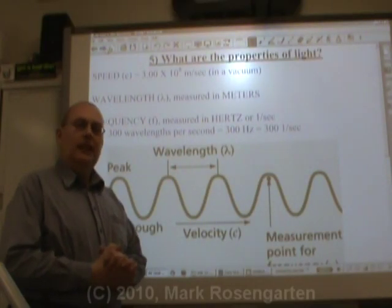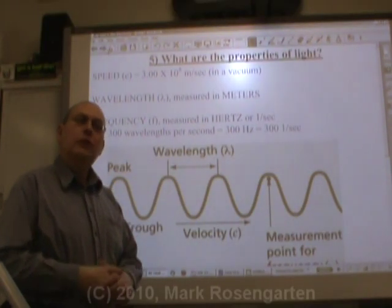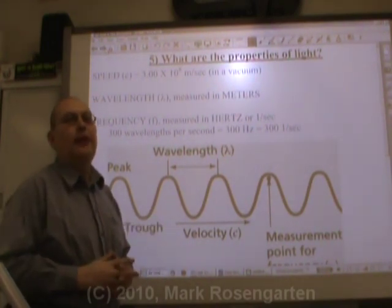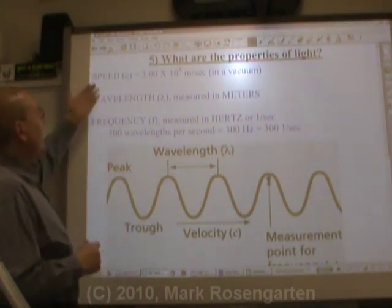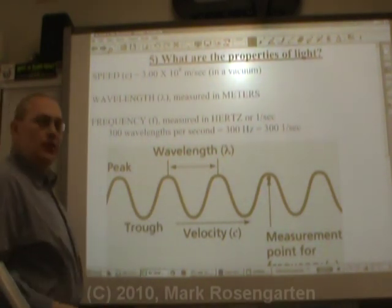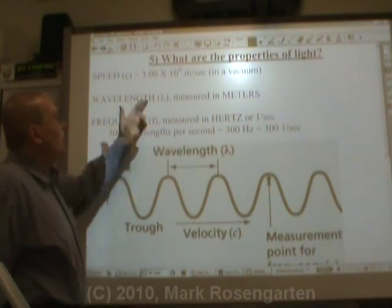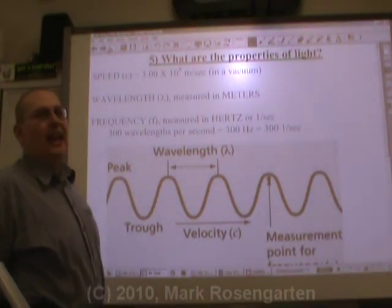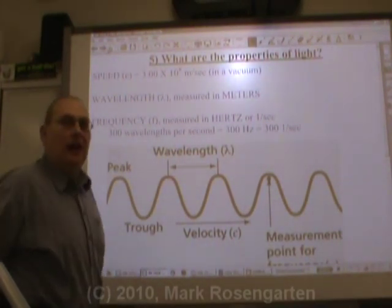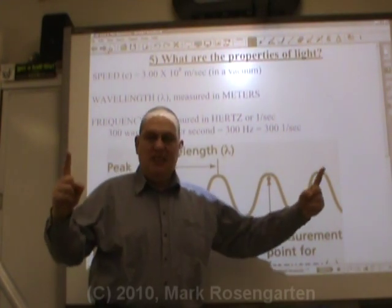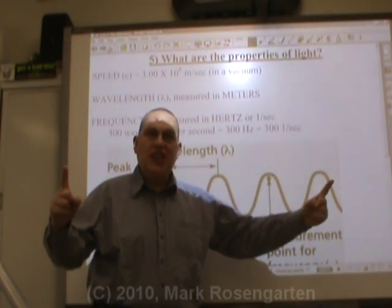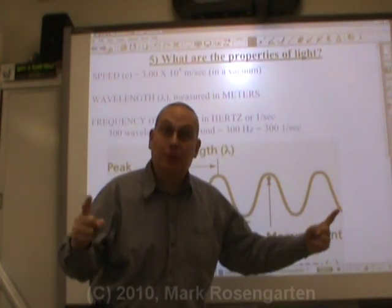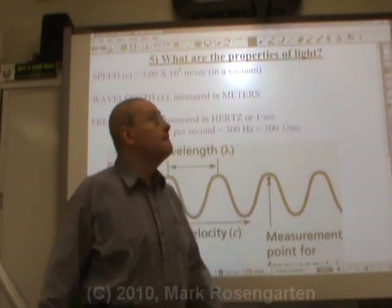There are a few properties that light has that allow us to do calculations involving light. Light travels at a certain speed: 3.00 times 10 to the 8th meters per second in a vacuum — 300 million meters per second. Now that's fast.